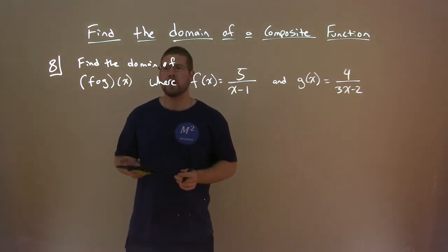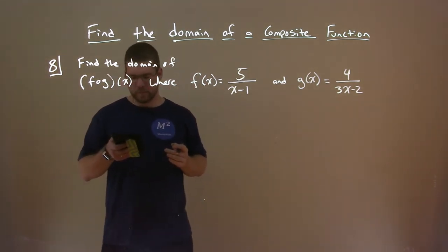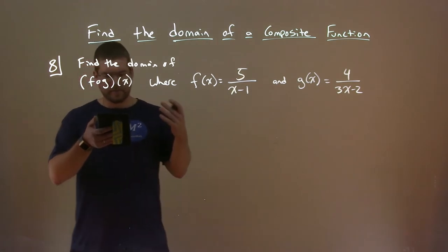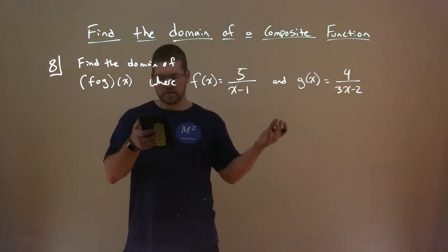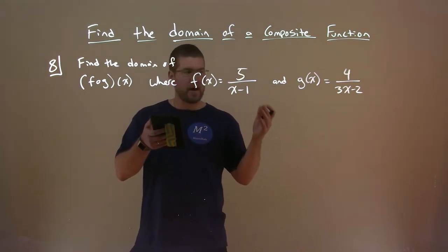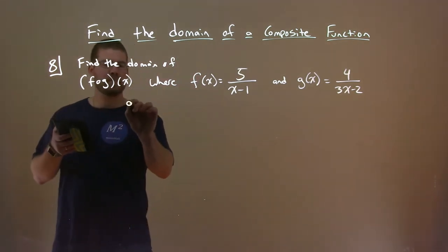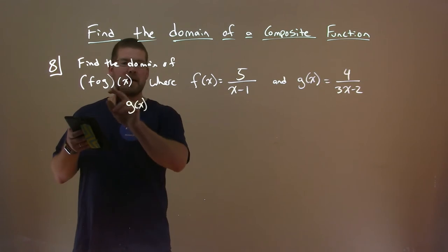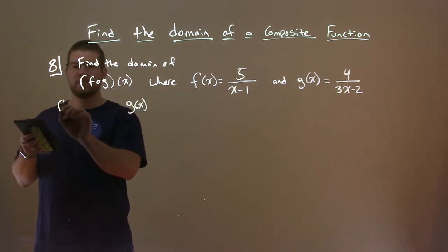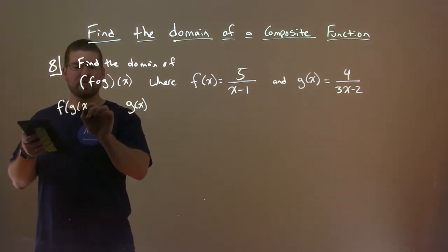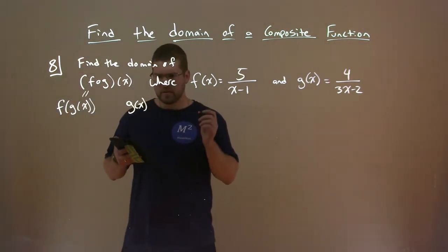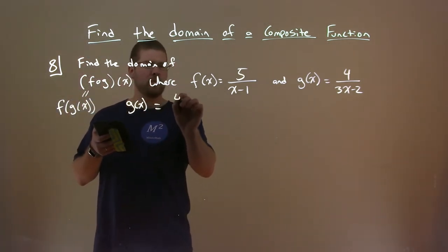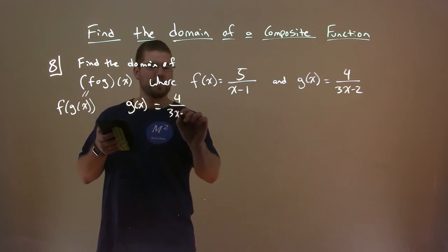Alright, so we're going to find that domain. So what we're going to do is really look at here and see the domain of each one. What's the domain of g of x first? So g of x here, let's take g of x because f of g of x is f of g of x if you want to see it that way. So g of x we know is that 4 over 3x minus 2.